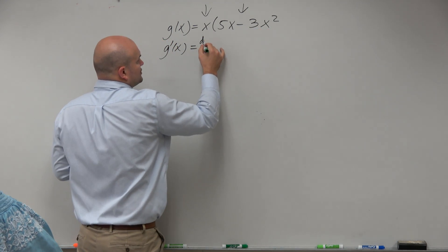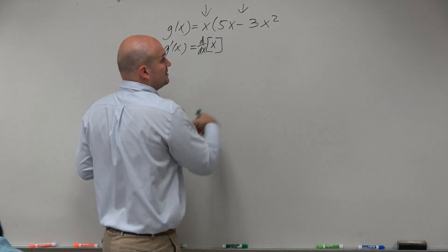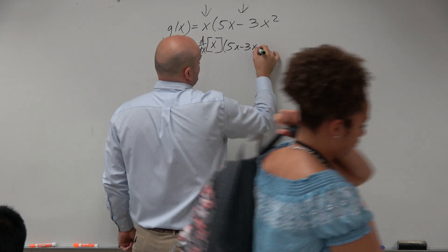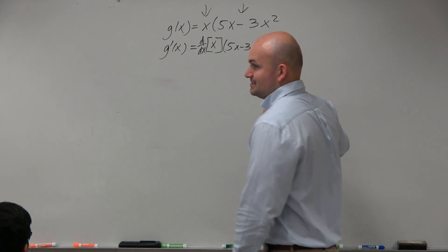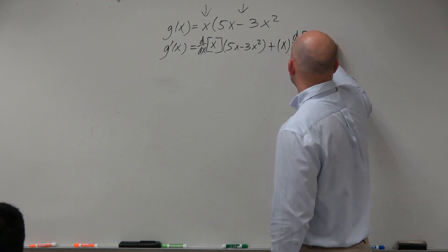So, we're going to take the derivative of the first function, times it by the second function, add that to the first function, times the derivative of our second function.